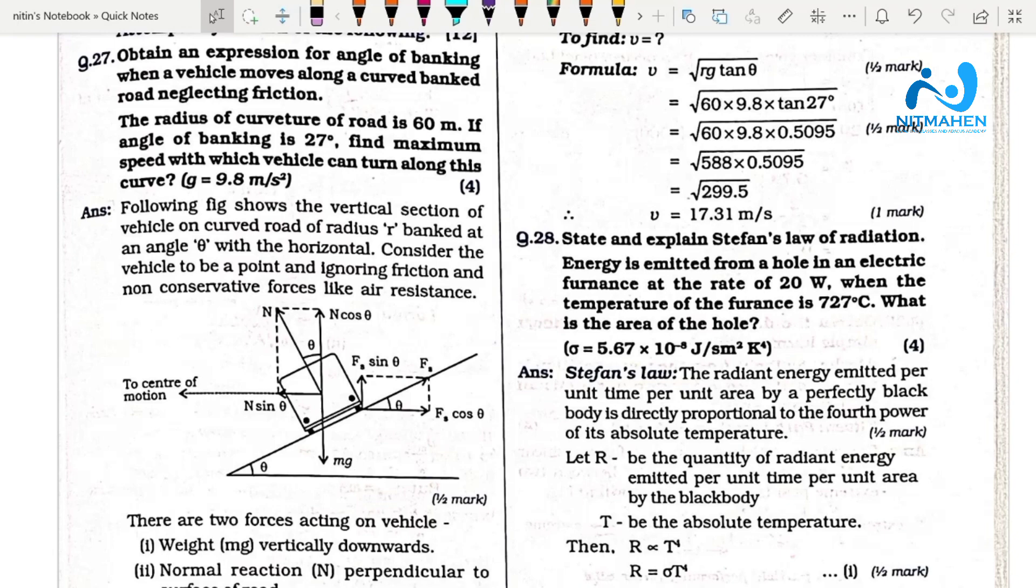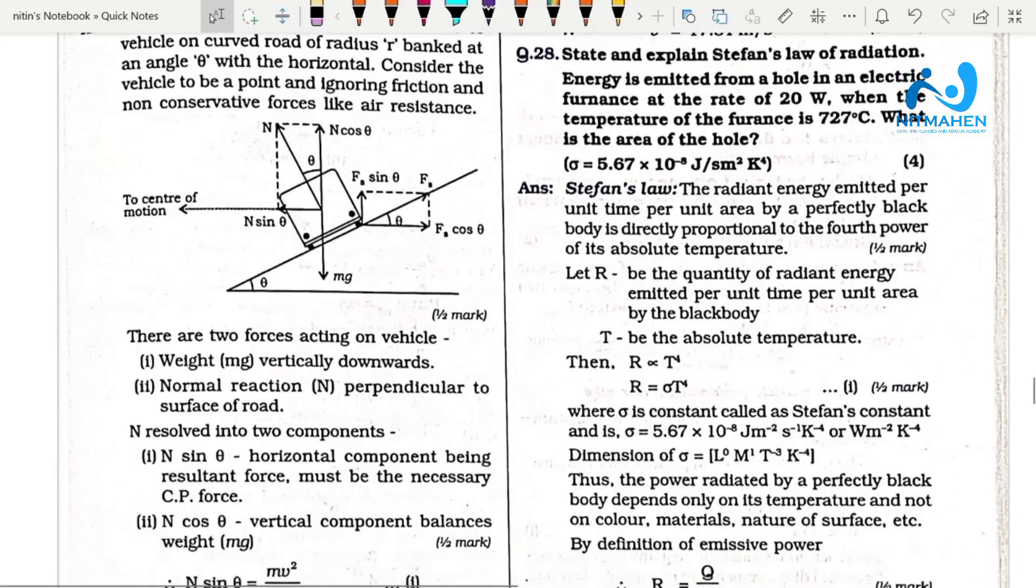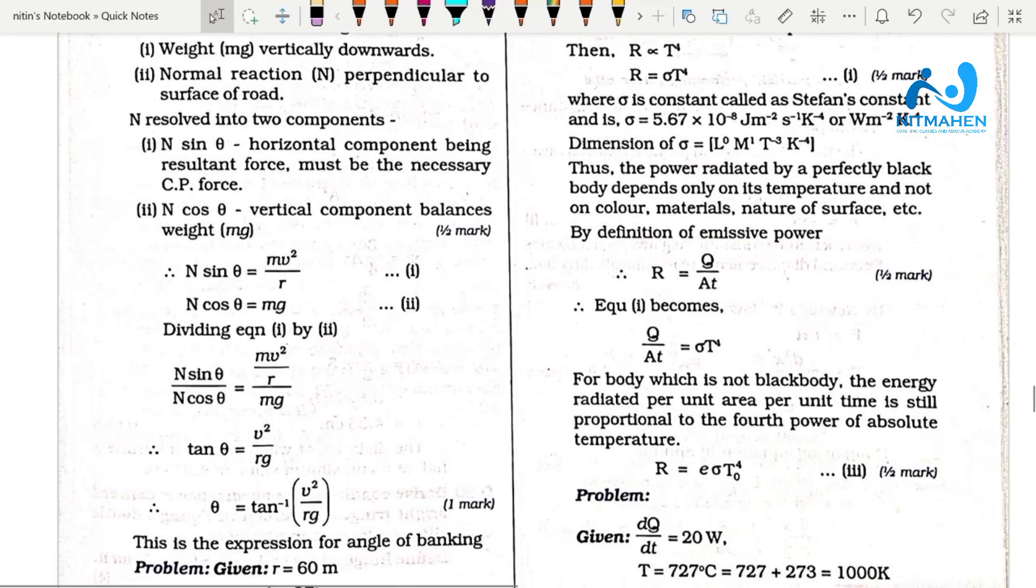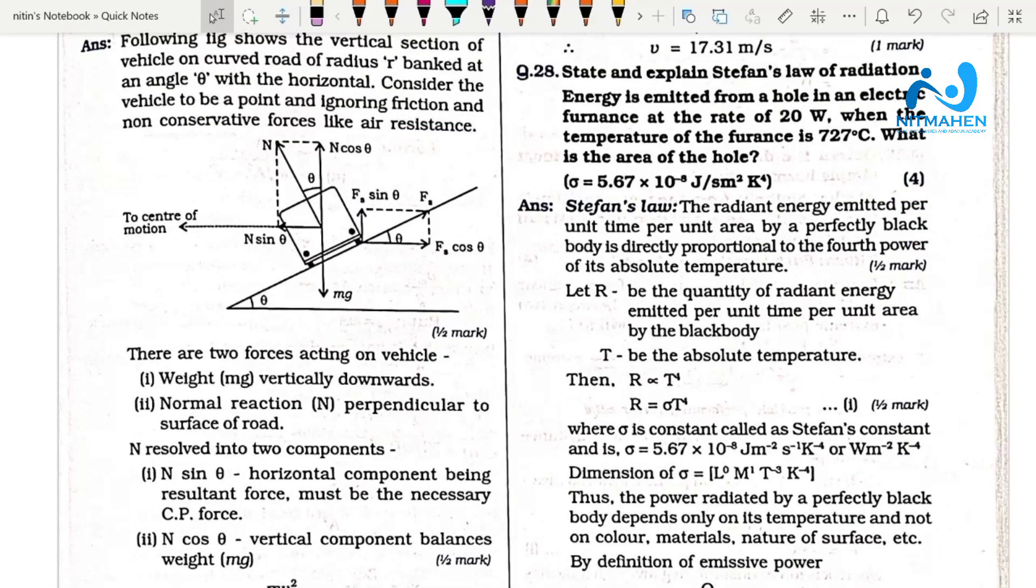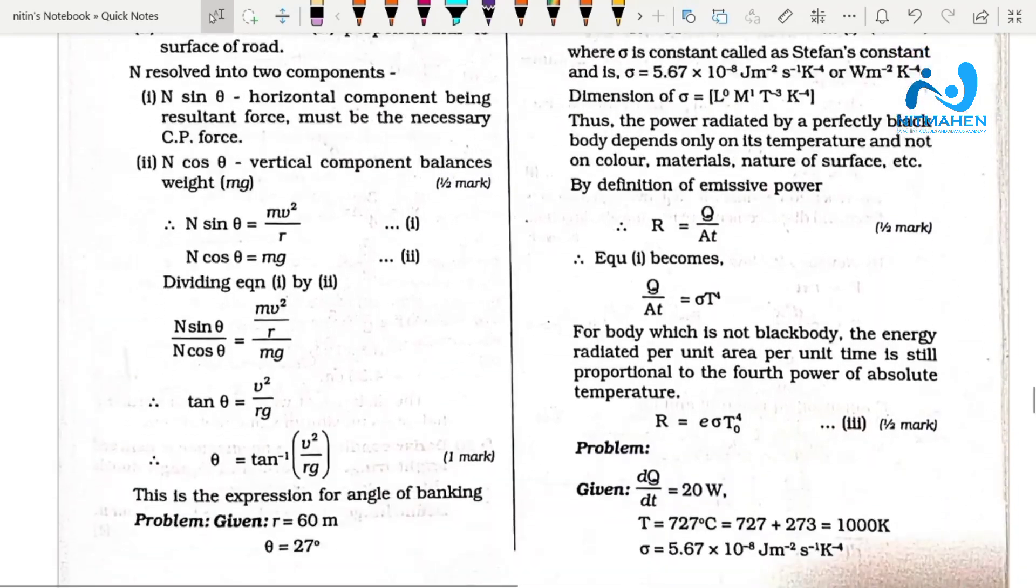This is a problem where you combine them. The question is theoretical in nature. The formula is V squared upon RG - this question appears in the 11th class and also here.